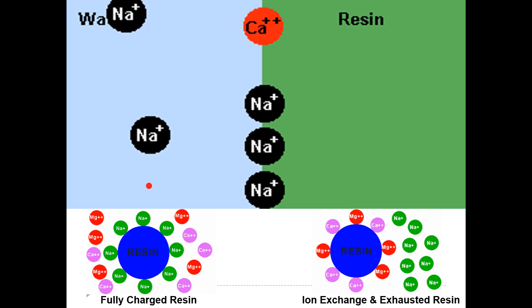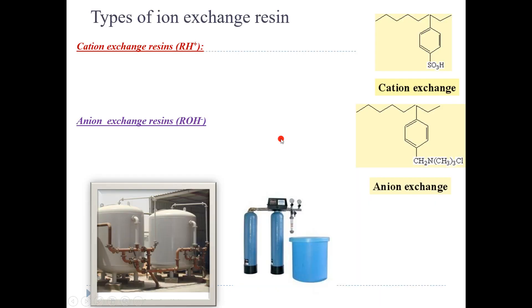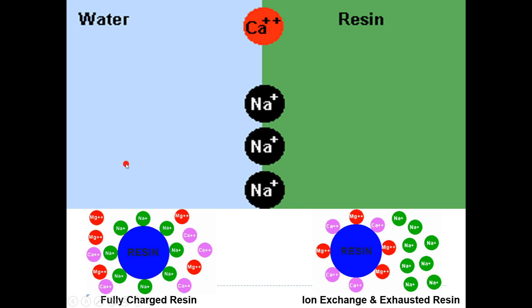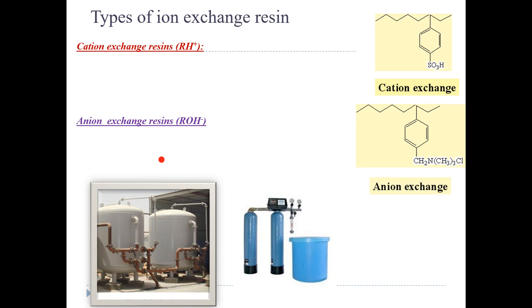There are two types — cation and anion — so we need two types of resins. Hard water contains calcium and magnesium ions, and the resin is made up of sodium ions. The exchange takes place such that a Ca2+ ion replaces two sodium ions. For Al3+, three sodium ions would be replaced. Hard water cations stay on the resin, and the soft water cations get into the water — so hard water is converted to soft water.